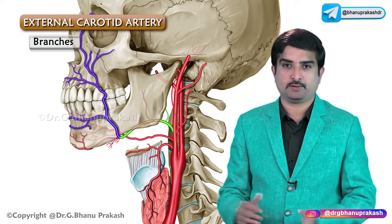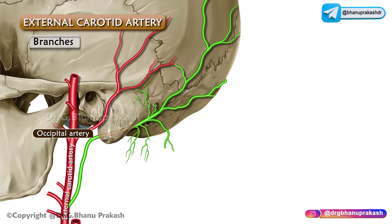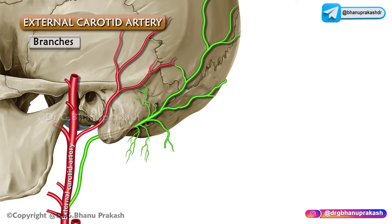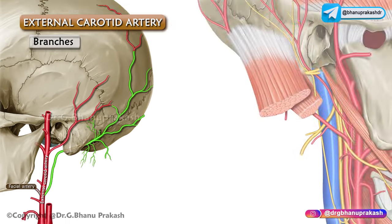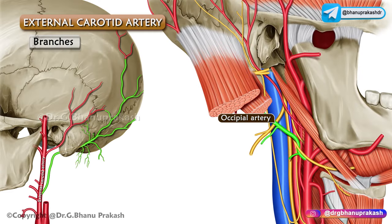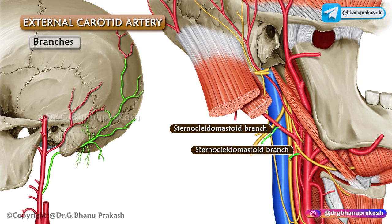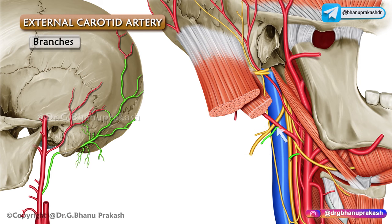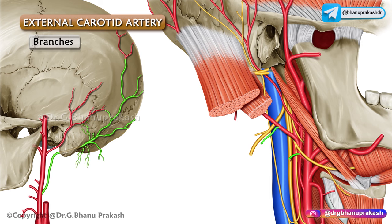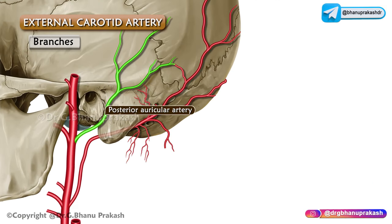The occipital artery arises from the posterior aspect of the external carotid artery opposite the origin of the facial artery, and is crossed at its origin by the hypoglossal nerve. In the carotid triangle, the artery gives two sternocleidomastoid branches: the upper branch accompanies the accessory nerve, and the lower branch arises near the origin of the occipital artery.